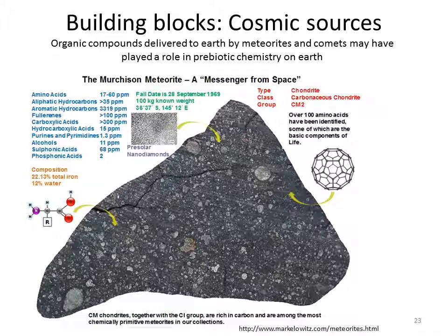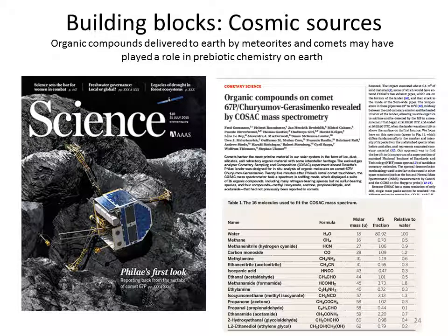Another likely source for organic molecules on early Earth is import from space by meteorites. Meteorites found on Earth have been scrutinized for their content in organic molecules, and in some meteorites a large diversity of organic compounds were found. The famous Murchison meteorite is one example. Additionally, when humans for the first time landed an unmanned spacecraft on a comet, the Philae lander found 16 organic compounds on the comet in its first survey. So cosmic sources of organic molecules could have played an important role in prebiotic chemistry on Earth.